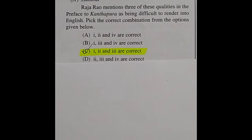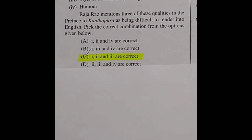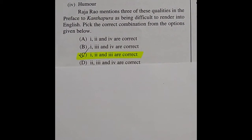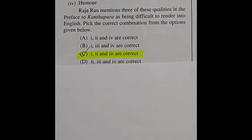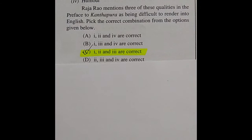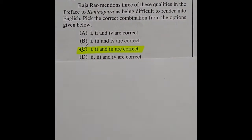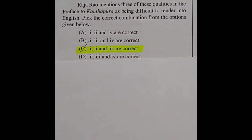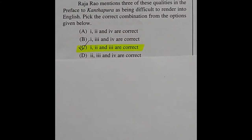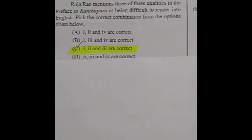Question 56: Here are four aspects of the Indian psyche that do not translate very easily into English. Raja Rao mentions three of these qualities in the preface to Kanthapura as being difficult to render into English. The right answer is option C: options 1, 2, and 3 are correct — culturally inflected thought processes; language, especially idioms; and style or manner of speaking.